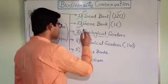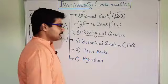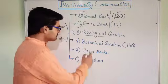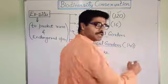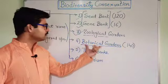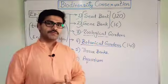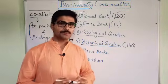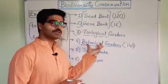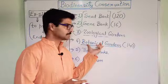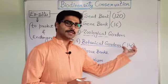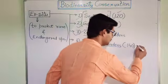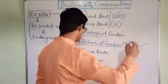The next concept in ex-situ biodiversity conservation is botanical gardens. In botanical gardens, we conserve and protect only plant species — this is only for plants. In India, till date we have more than 140 botanical gardens.